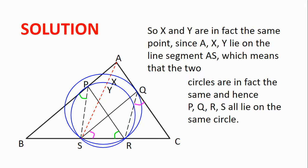So X and Y are in fact the same point, since A, X and Y all lie on the line segment AS, which means that the two circles are in fact the same, because they intersect AS at the same point. And so P, Q, R and S all lie on the same circle, because the circumcircle of PRS and QRS is the same.